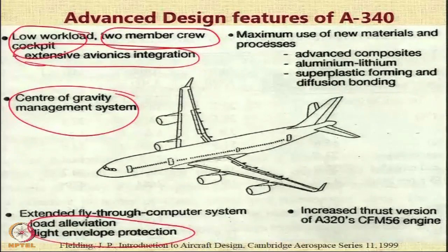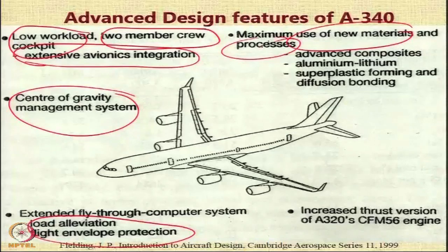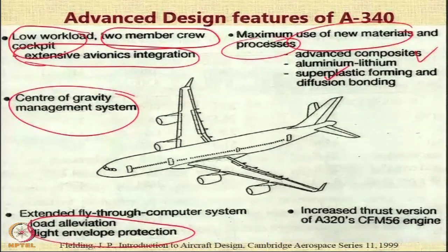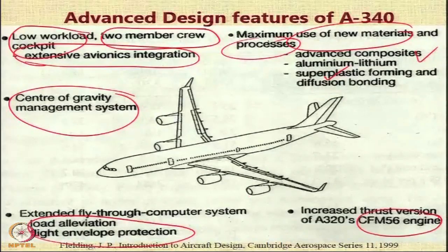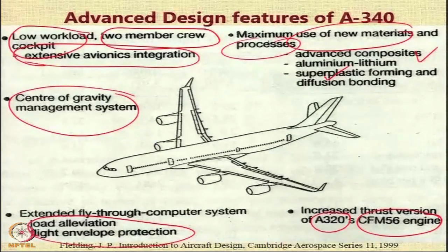On the structural side, the designers used new materials and processes — composites, superplastic forming and diffusion bonding, and aluminum-lithium alloys. On the power plant side, the aircraft was fitted with the CFM56 engine, an engine originally used on the Airbus A320 that was enhanced to power the A340.